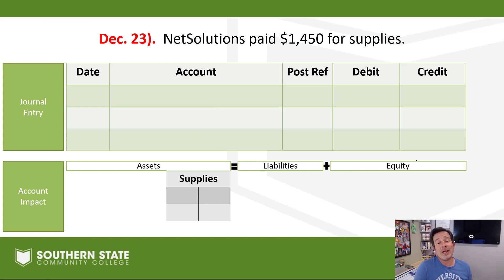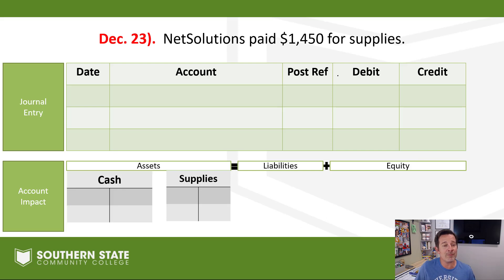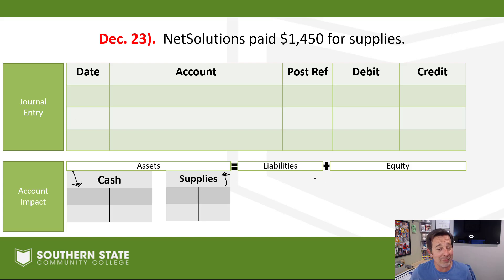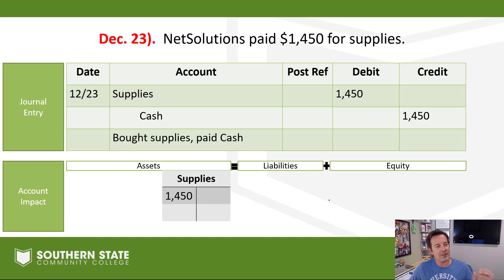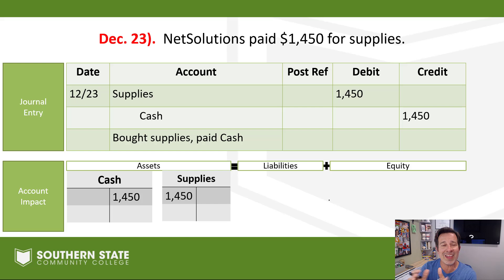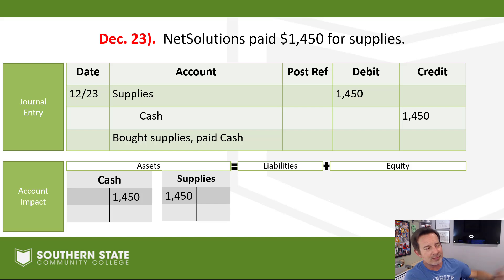December 23rd — NetSolutions paid $1,450 for supplies. Buying some supplies and paying in cash — two accounts in play. Our supplies account needs to go up and our cash account needs to go down. The entry: debit to supplies (asset account) for $1,450 — we bought supplies, kept them in a supply closet, and we'll use them up as needed. Cash account comes down with a credit.